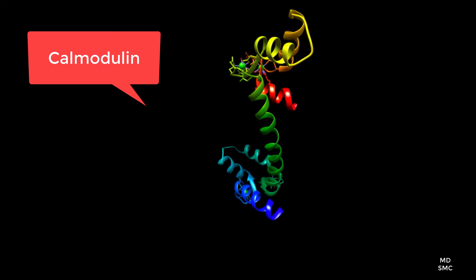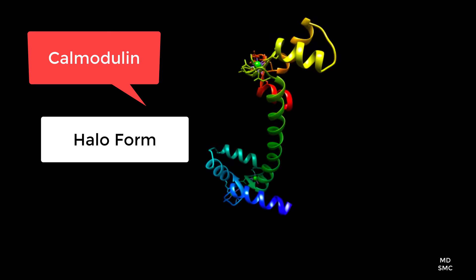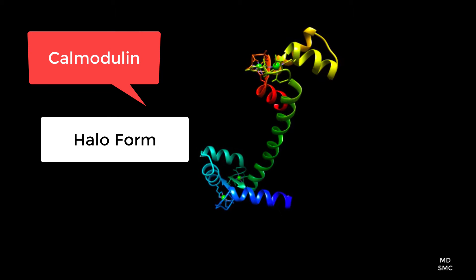This is called the halo conformation. During calcium signaling, the protein is able to take this form in order to take part in essential function.